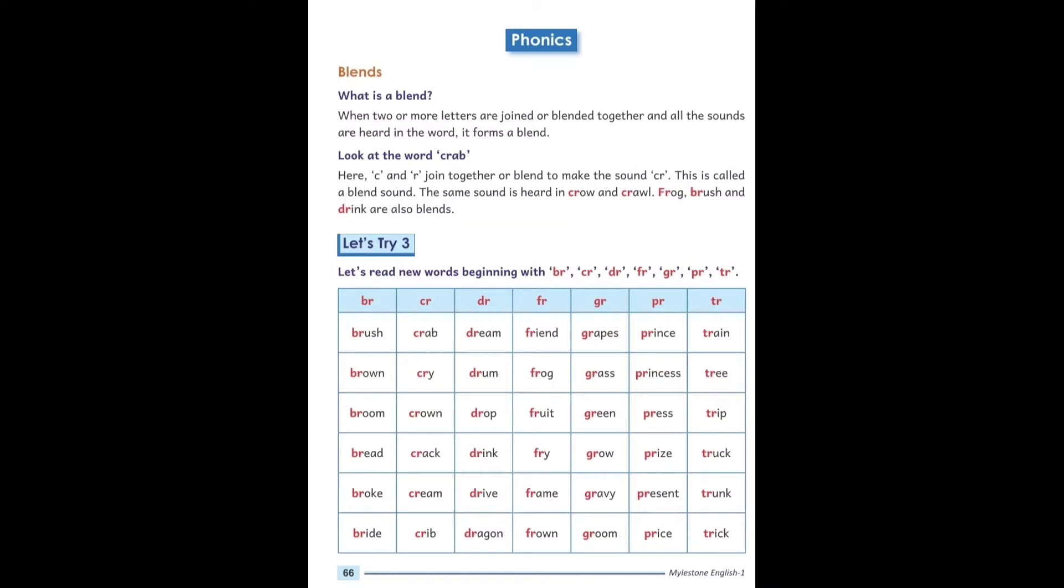Look at the word crab. Here, C and R join together to blend and make the sound CR. This is called a blend sound. The same sound is heard in crow and crawl. Frog, brush and drink are also blends.